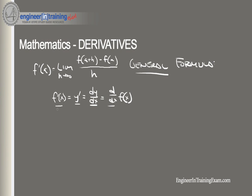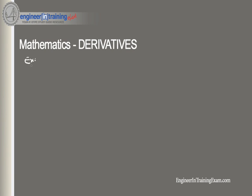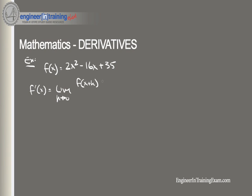Let's find the derivative of the function f(x) = 2x² - 16x + 35 using the general formula. f'(x) equals the limit as h goes to 0 of [f(x+h) minus f(x)] divided by h. There's going to be a lot of simplifying and rearranging involved, so it might get a little messy, but we'll see the results at the end.